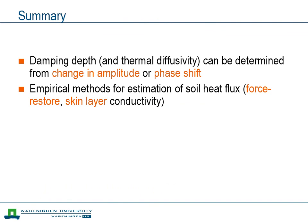To summarize: we looked at ways to determine the damping depth from observed temperature variations. Having observations of soil temperature at two depths, we can use either variations in amplitude or the phase shift between the two depths to determine the damping depth, and from that the soil thermal diffusivity. We also looked at two methods to model or estimate the soil flux: the force-restore method, where the depth of the layer is directly coupled to the frequency of temperature variation and the soil thermal diffusivity; and the vegetation layer approach, modeling the coupling between temperature at the top of the vegetation and the top of the soil.